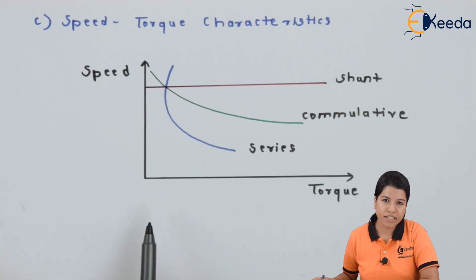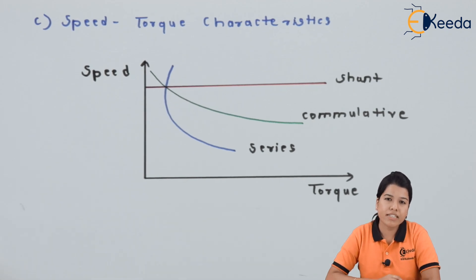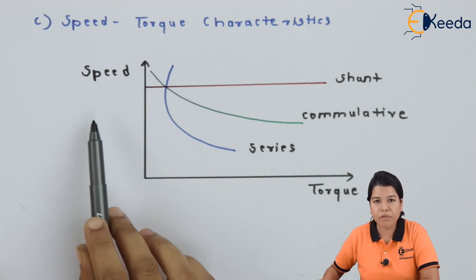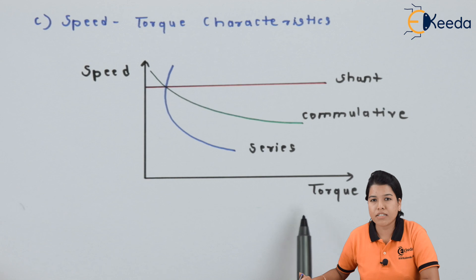Now, this is the speed torque characteristic. As we have studied in the DC series motor, the speed torque characteristic can be drawn combining the speed vs. armature current characteristic and torque vs. armature current characteristic. Same thing is done here. Here, our y-axis represents speed and our x-axis represents the torque.